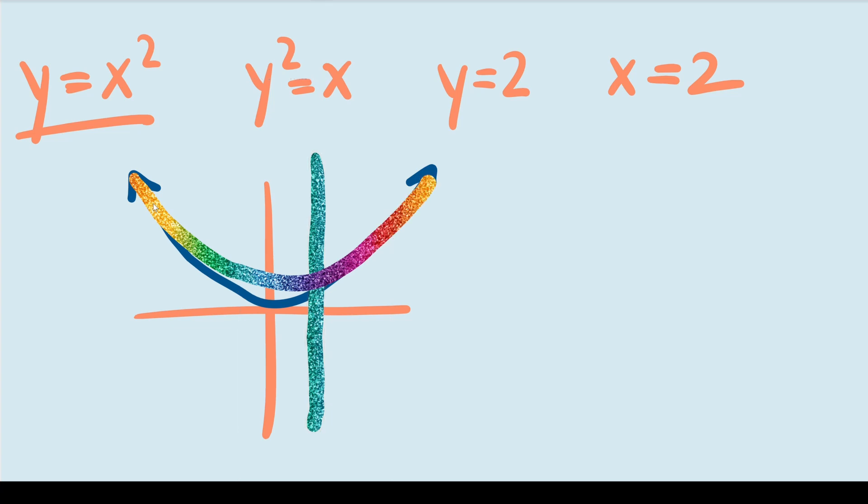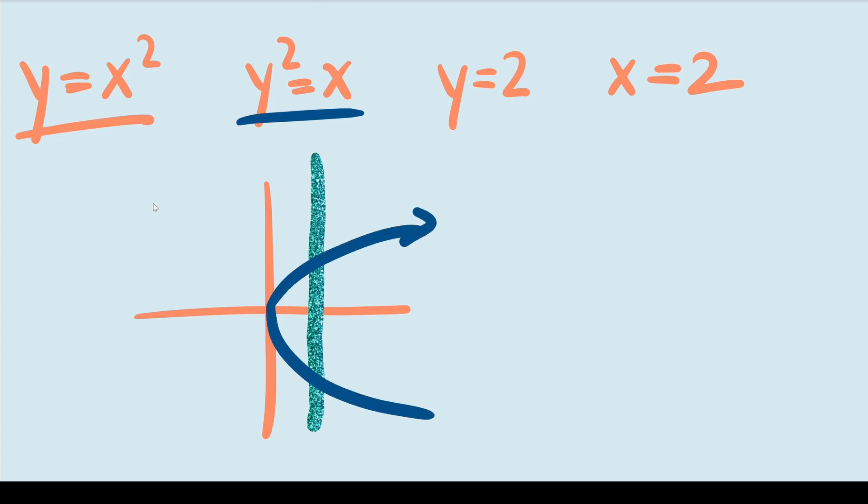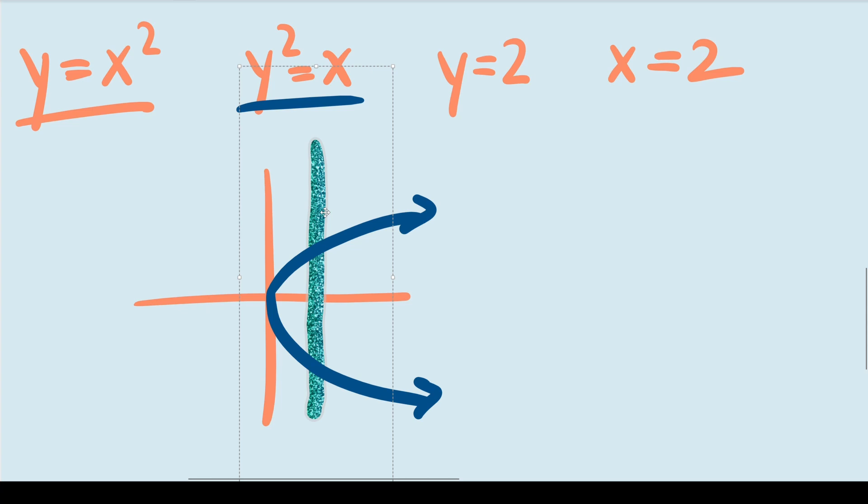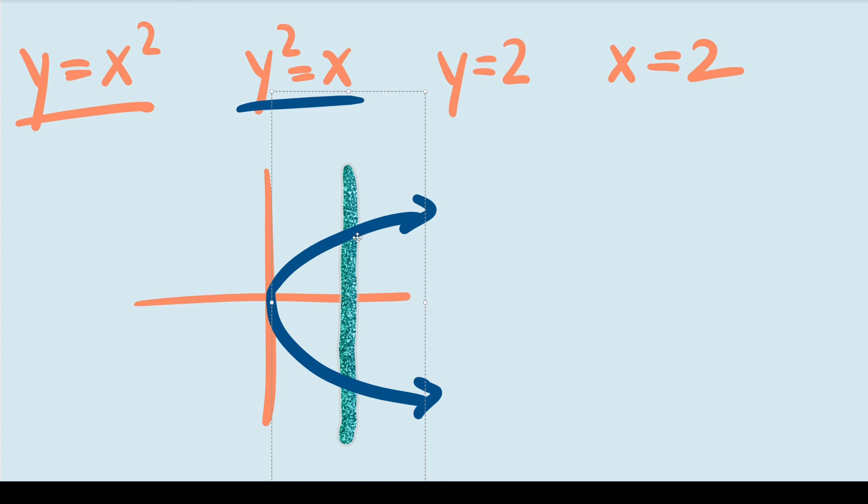Now let's do the same for the other graphs. The graph of y squared equals x looks somewhat like this. Now we can see here that moving the vertical line along the graph results in the graph touching that line at two different points. One time right here and another time right here.